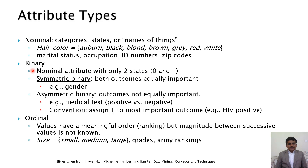Next is the binary attribute — a nominal attribute with only two states, 0 and 1. Binary attributes can be symmetric binary or asymmetric binary. For example, gender is a symmetric binary attribute, where both states have equal importance. Asymmetric binary attributes have outcomes that are not equally important. For example, a medical test result of positive versus negative — by convention, 1 is assigned to the most important outcome, such as HIV positive. In asymmetric binary, both outcomes are not equally important.